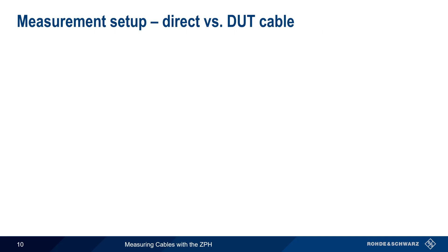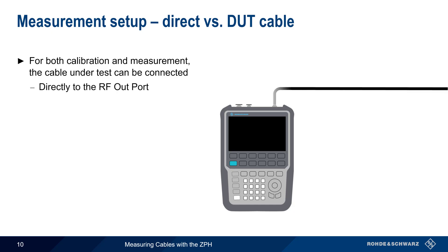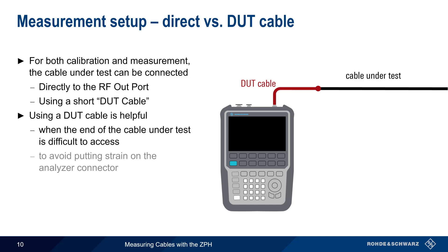For both calibration and measurement, the cable under test can be connected to the ZPH in two different ways. It can either be directly connected to the RF port, or it can be connected to this port using a short DUT cable. There are several reasons why using a DUT cable is helpful. The first is for cases where the cable under test's connector is difficult to access, such as when it terminates in an enclosure, or is attached to a tower or mast. Another reason is that using a DUT cable can reduce wear and tear, or mechanical stress, on the analyzer port.